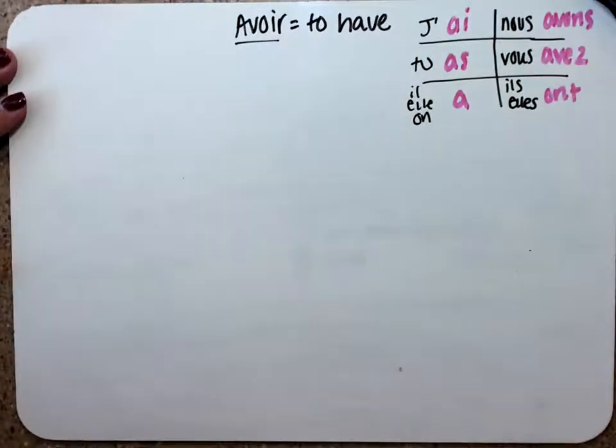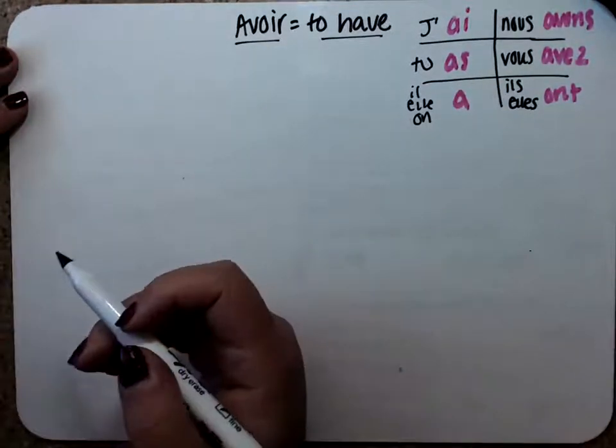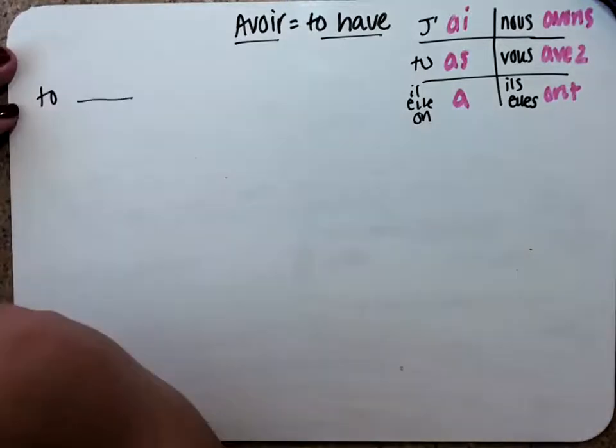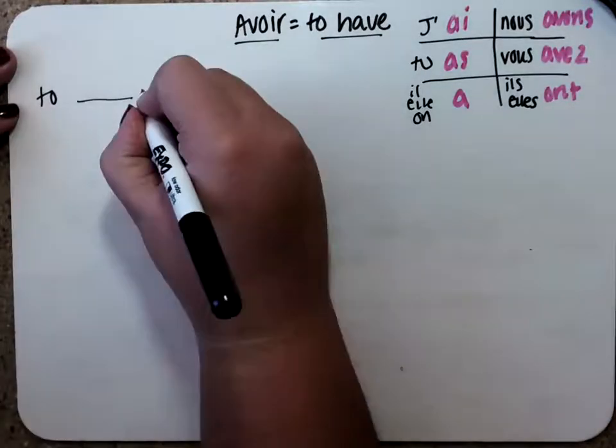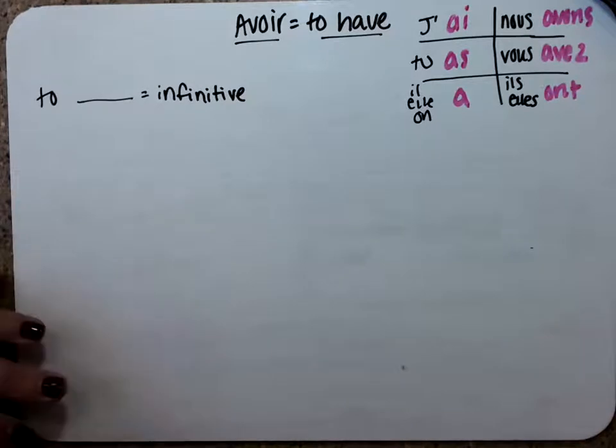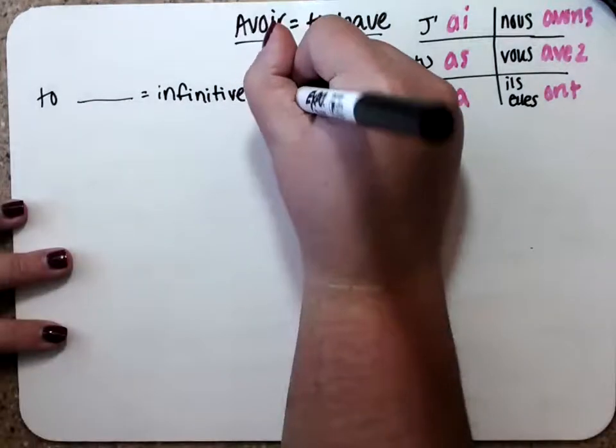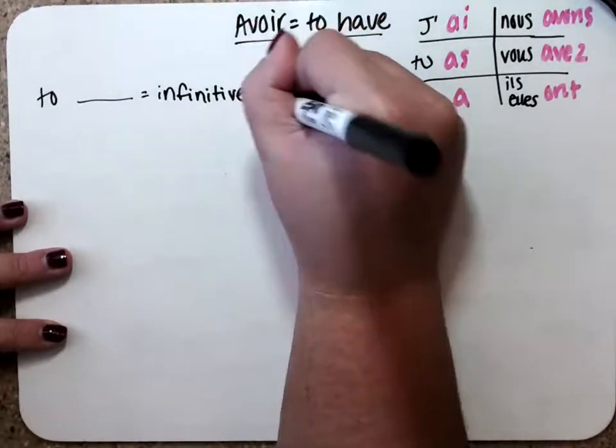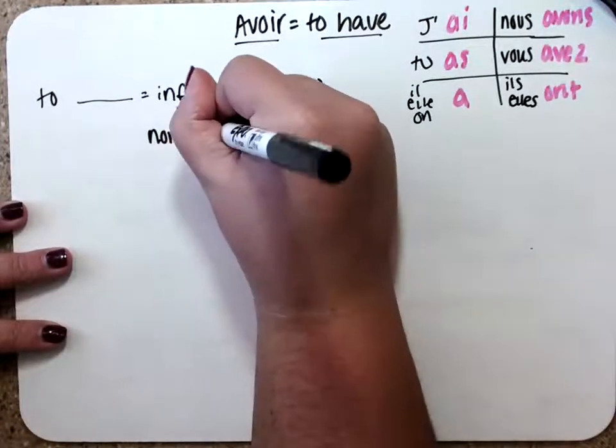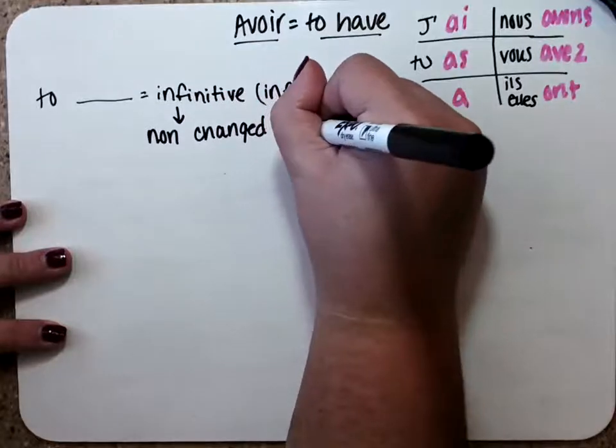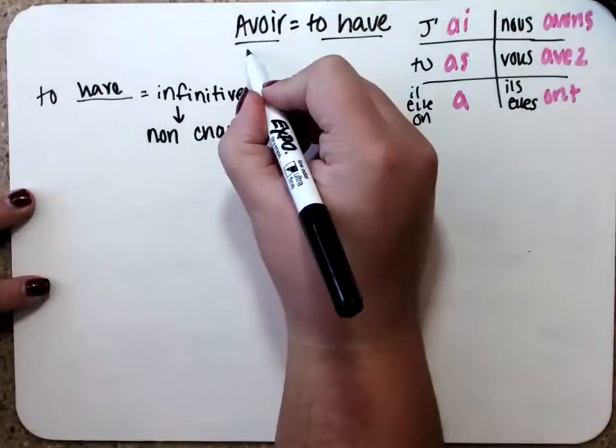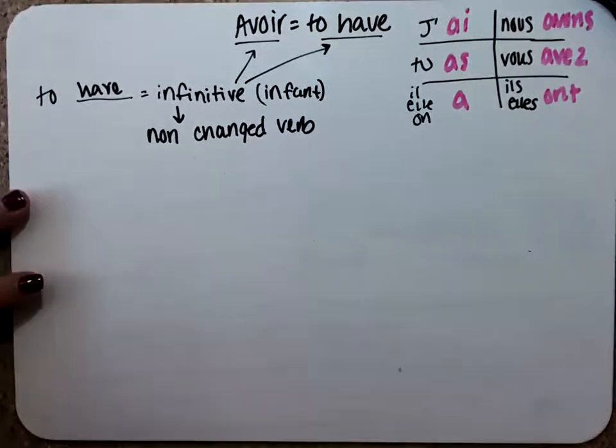And so I want to talk about a couple different things that you'll probably see come up very soon. So this right here is called a verb, and this is a verb. One is just in French, and one is just in English. Whenever in English you see something that says to and then it has a verb, that means it's an infinitive. So an infinitive just means that it's a verb that has not changed. Think of like infant, like when something is small, it might help you remember that an infinitive is just a non-changed verb. So an infinitive is just a non-changed verb.